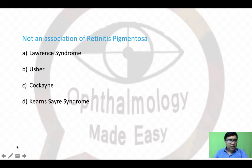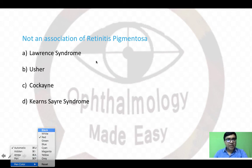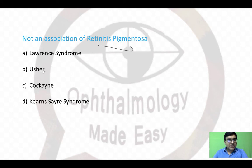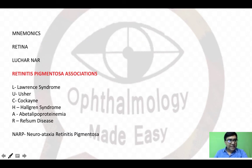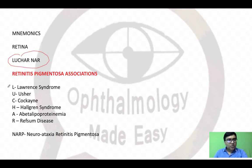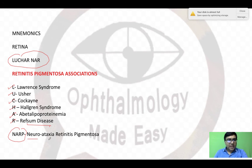The next question: what is not an association of retinitis pigmentosa? Options include Laurence syndrome, Usher syndrome, Cocaine syndrome, and Kearns-Sayre syndrome. The answer is Kearns-Sayre syndrome. Use the mnemonic 'LUCHAR NRP': L — Laurence syndrome, U — Usher syndrome, C — Cocaine syndrome, H — Hallgren syndrome, A — Abetalipoproteinemia, R — Refsum disease, N — Neuropathy, A — Ataxia, RP — Retinitis Pigmentosa. This is a previous year AIIMS question.